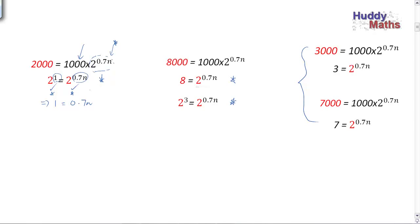We will equate the powers, if we can write both sides as a power of the same base. So 1 divided by 0.7 would be n, or 10 over 7 would be n. And then we could get an approximate decimal to three significant figures.